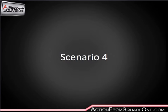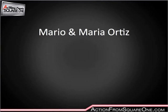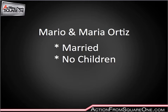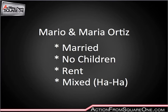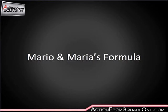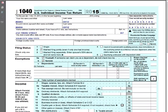Scenario number four. Here we have Mario and Maria Ortiz. They are a married couple. They have no children as of yet. They are renting their home. Here's the doozy: they have a mixed payment schedule. One gets paid monthly and the other one is self-employed — so they're going to use quarterly estimated payments. It's going to be interesting to find a formula that works because you have one W-2 and then you have one Schedule C.